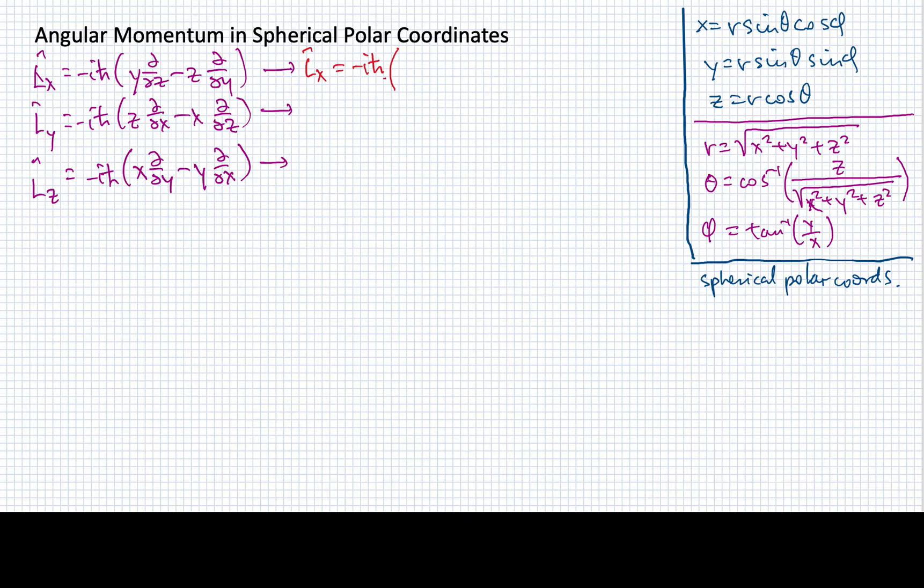But now the i h-bar is going to be multiplied by minus sine of phi d/dθ minus cotangent of theta cosine of phi times d/dφ.